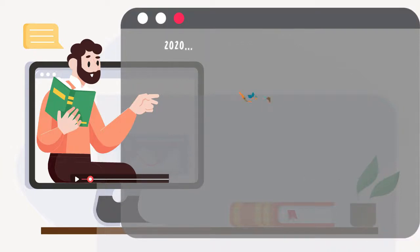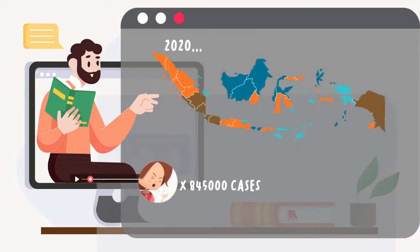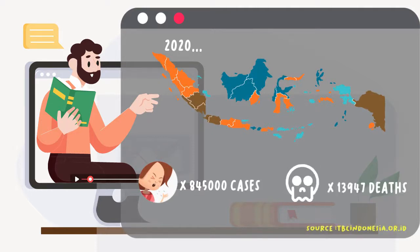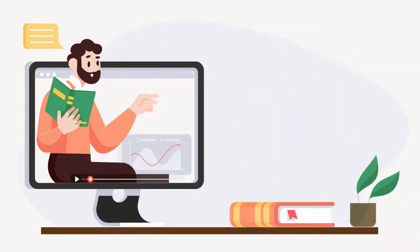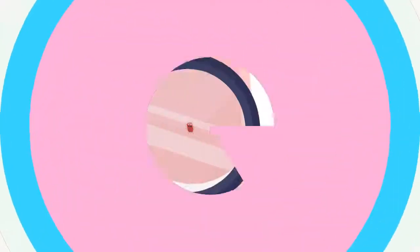In 2020, more than 800,000 people contracted TB and about 14,000 people died from it in Indonesia alone. So let's talk about it in detail and see why it is so dangerous.